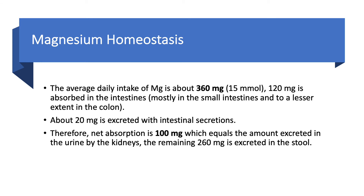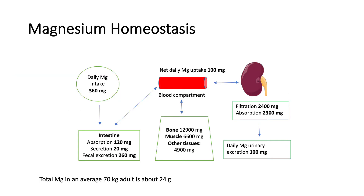The average intake of magnesium is about 360 milligrams per day, which is about 50 milliequivalents. Of that, 120 milligrams is absorbed in the intestine — mostly the small intestine, not the colon — and 20 milligrams is excreted with intestinal secretions. So the net absorption is 100 milligrams. This 100 milligrams is subsequently excreted in the urine, and the remaining 260 milligrams is excreted in the stool.